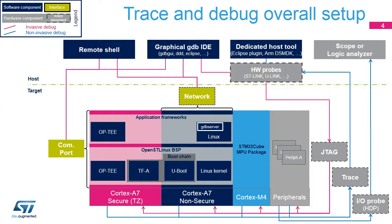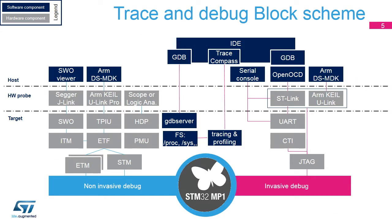We can mention that this is a general trace and debug setup view. Some external target interfaces may not necessarily be present on all boards. For example, trace and IOProbe interfaces are not present on the DISCO board. This scheme is a hardware and software block representation, which allows a parallel with the detailed debug block diagram available in the STM32MP1 reference manual. It highlights the main ARM CoreSight block IP embedded in the STM32MP1 chip.